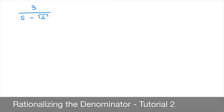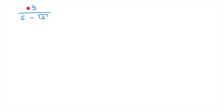We now learn how to rationalize the denominator for expressions which are slightly more complicated than the ones we've seen so far. Consider the expression we have here, for instance. We have 3 over 5 minus the square root of 2. We can see that we have a radical on the denominator — indeed, we have square root of 2 here.